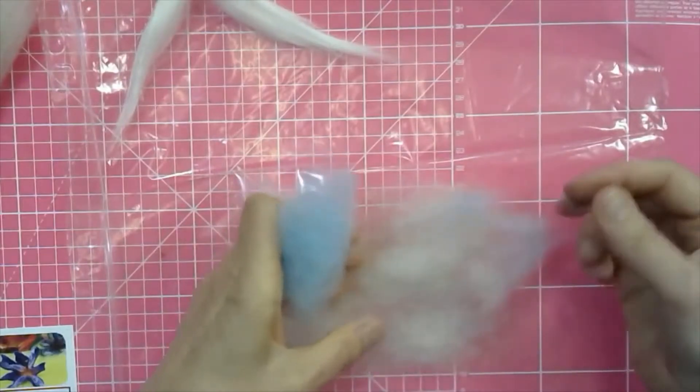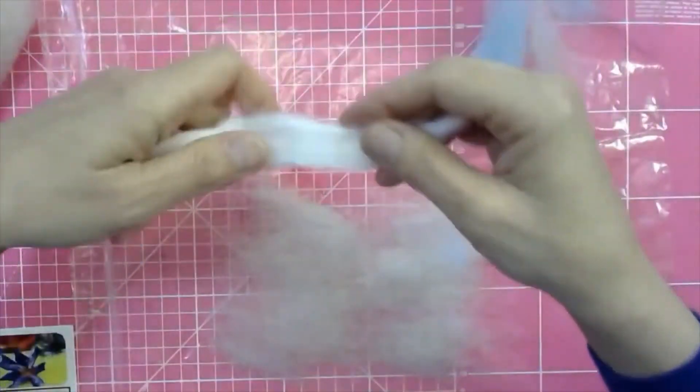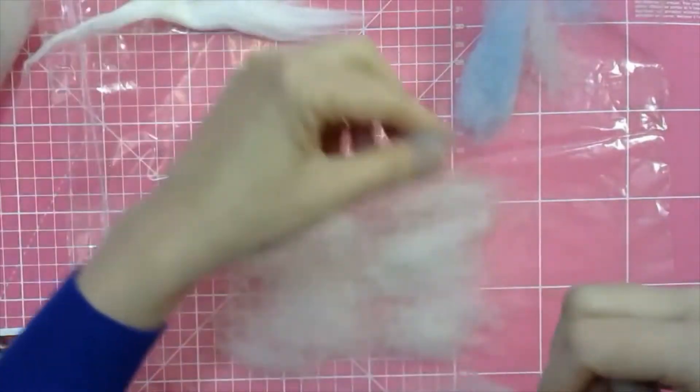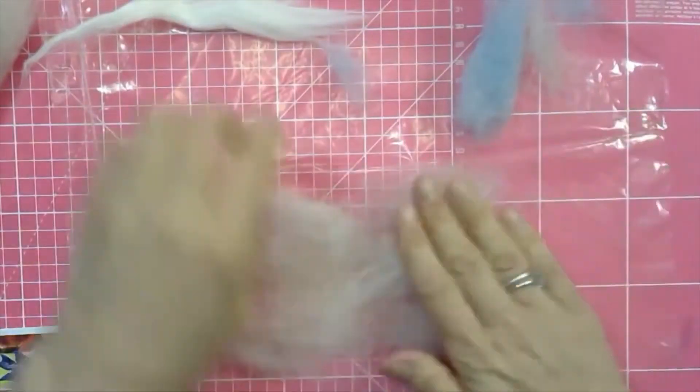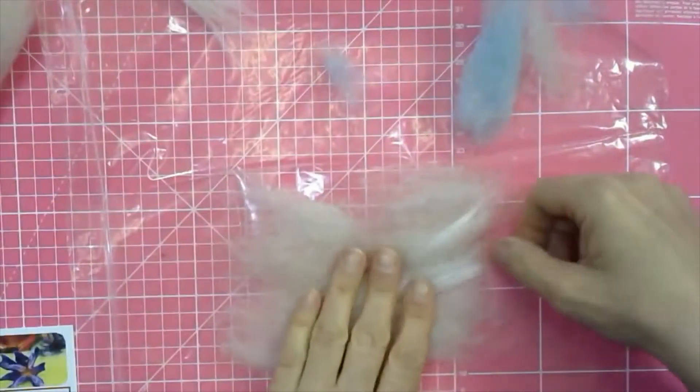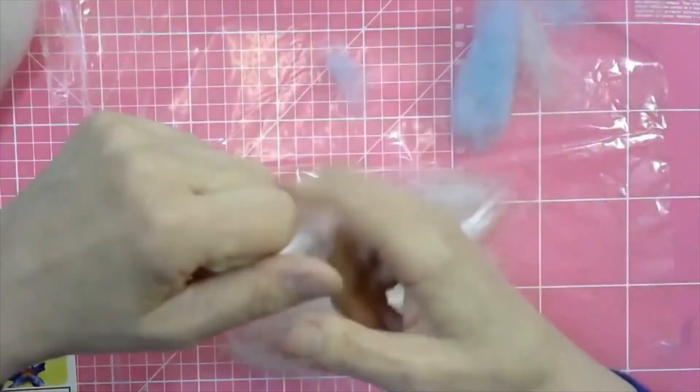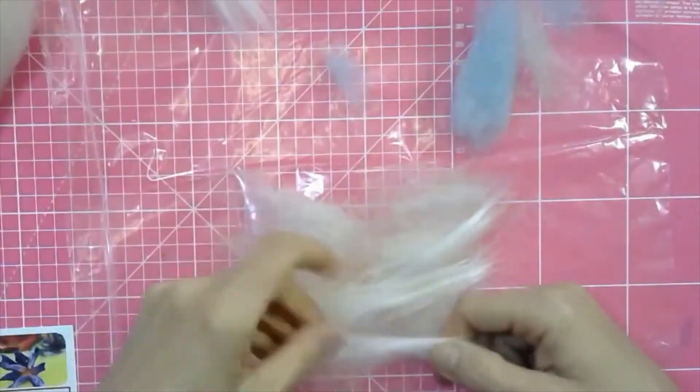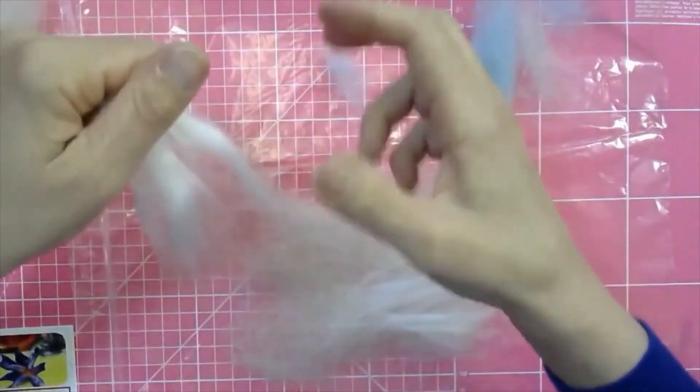In fact, we're going to put the white on first because these plant fibers don't naturally felt on their own. They need to be trapped by the wool, so we're putting the white fibers down first, and then we lay the blue fibers over the top.